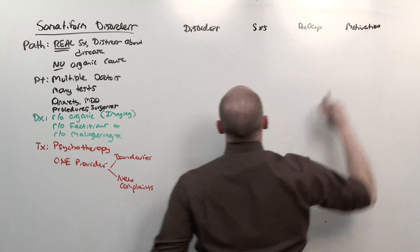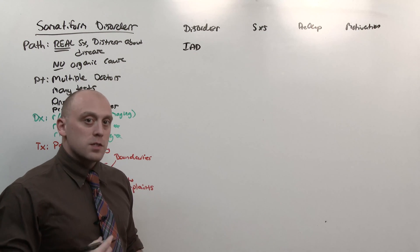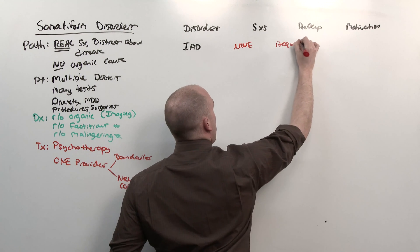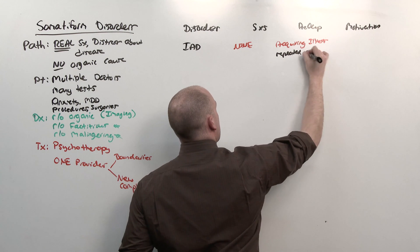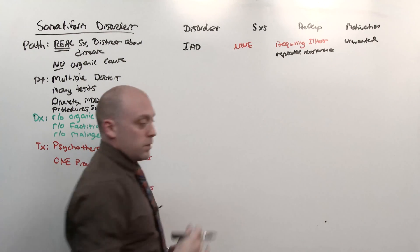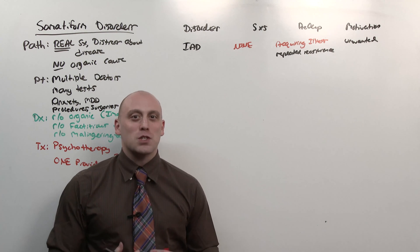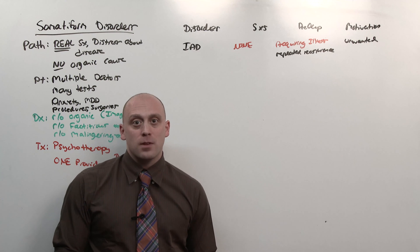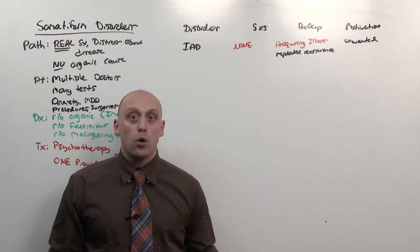The first illness anxiety disorder is effectively hypochondriasis renamed. Illness anxiety disorder is going to have no symptoms, but there is going to be a preoccupation with acquiring an illness, despite repeated reassurance. The motivation is absolutely unwanted. They don't want to feel these feelings. It's ego dystonic, and they're looking for your help. But because you constantly reassure them there's nothing wrong, they still worry about getting the disease. So this is the person who has had three colonoscopies at age 52. They're all been negative, but they're asking for another one because they want to make sure they don't have colon cancer. The preoccupation is with getting colon cancer, even though there's no colon cancer present.